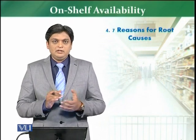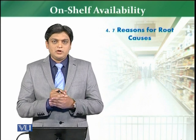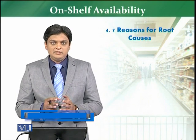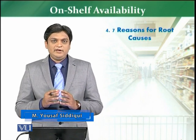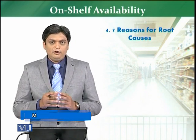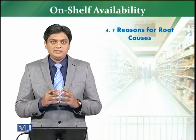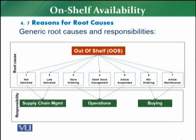Now we are going to discuss the reasons for root cause analysis. There are seven reasons for identifying when there is a gap on the shelf — how to identify that gap, what could be the reasons for it, and who to address when the gap is there. So we have a situation of out-of-shelf product, where the product is not available on the shelf. There are seven root causes for it.